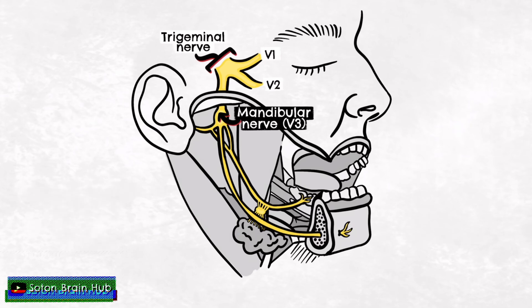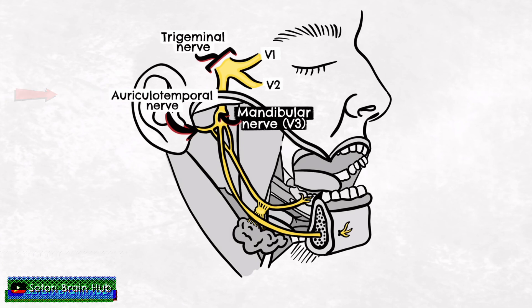Let's consider the branches of the mandibular nerve. The first branch is the auriculotemporal nerve, which passes posteriorly. This nerve actually arises as two roots: a superior sensory and an inferior secretory motor and parasympathetic root.